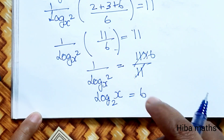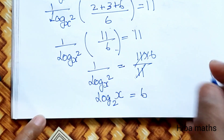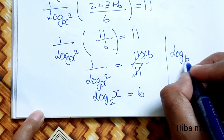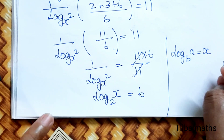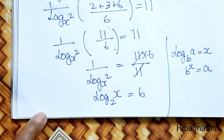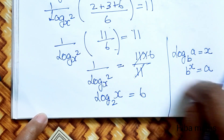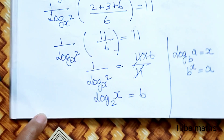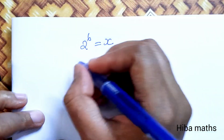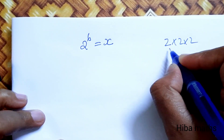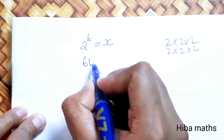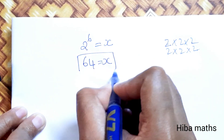So 6 equals — using the general logarithm format: log base b of a equals x means b power x equals a. Applying this format: log base x of 2 equals 6 means x power 6 equals 2... therefore 2 power 6 equals x. Calculating 2 times 2 times 2 times 2 times 2 times 2: 2 times 2 is 4, times 2 is 8, times 2 is 16, times 2 is 32, times 2 is 64. Therefore x is equal to 64. This is our answer.